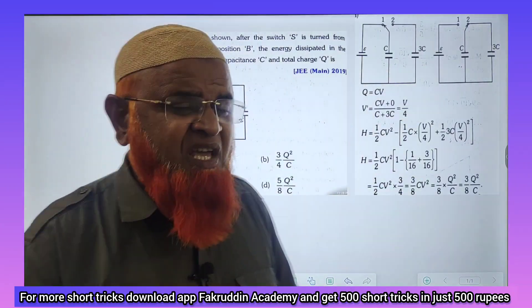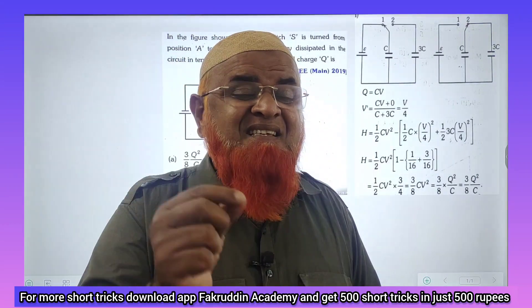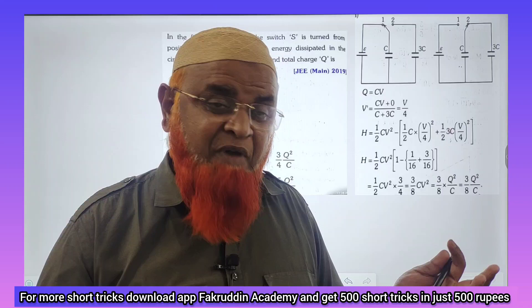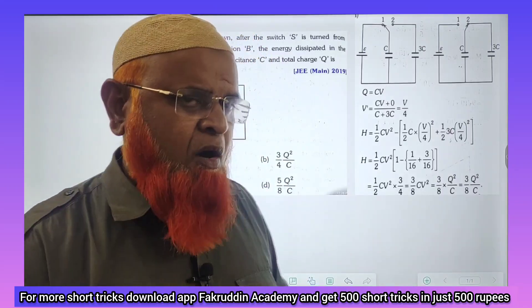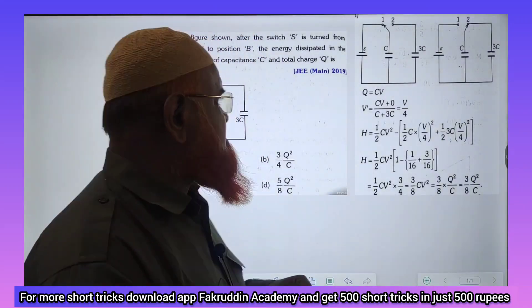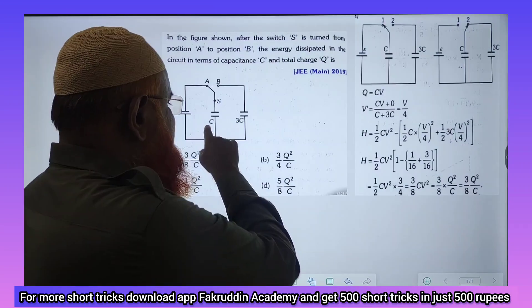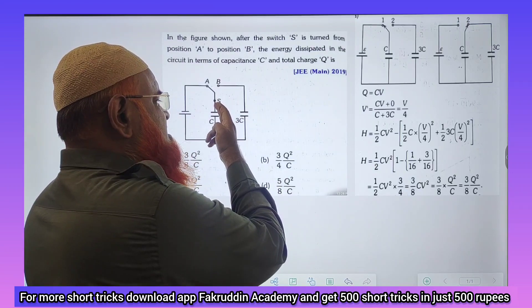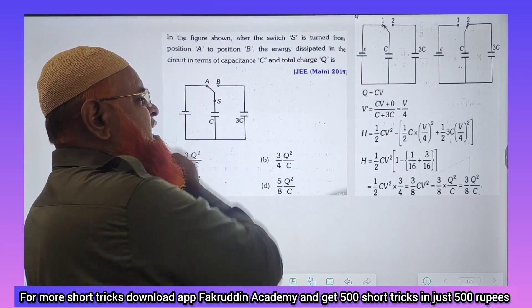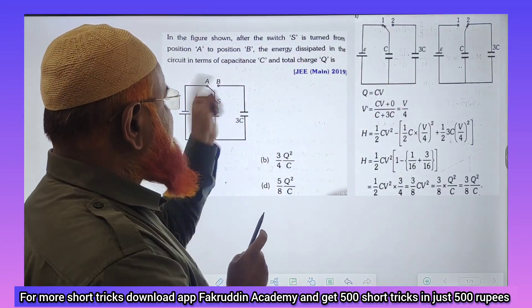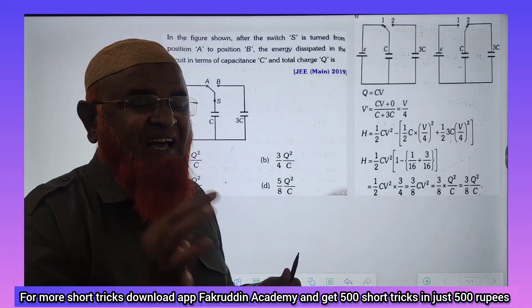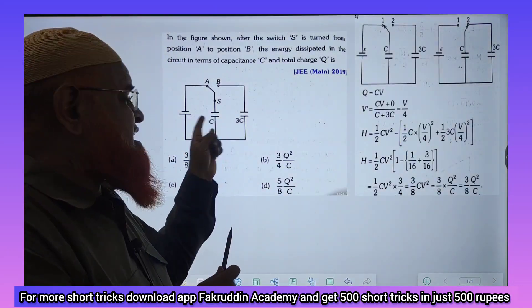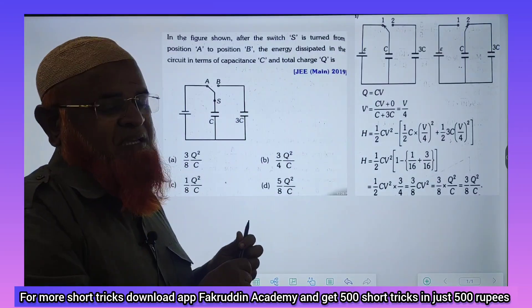But how would it be if physics is easier than biology? I can solve this problem without just pen and paper. Let me tell you how. First of all, this is a capacitor C and 3C, and this capacitor is connected to A terminal. After it is connected to B terminal, what is the energy dissipated, energy lost by the capacitor when it is connected to 3C?